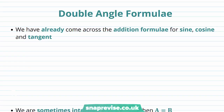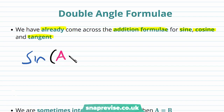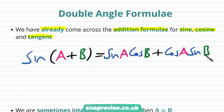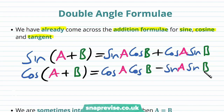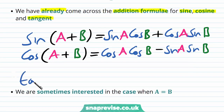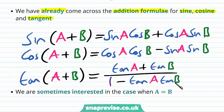So what exactly are double angle formulae? We have already come across the addition formulae for sine, cosine, and tangent. We know that sine of a plus b is equal to sine a cos b plus cos a sine b. We also know that cos of a plus b is equal to cos a cos b minus sine a sine b. And lastly, the tan of a plus b is equal to tan a plus tan b over 1 minus tan a tan b.